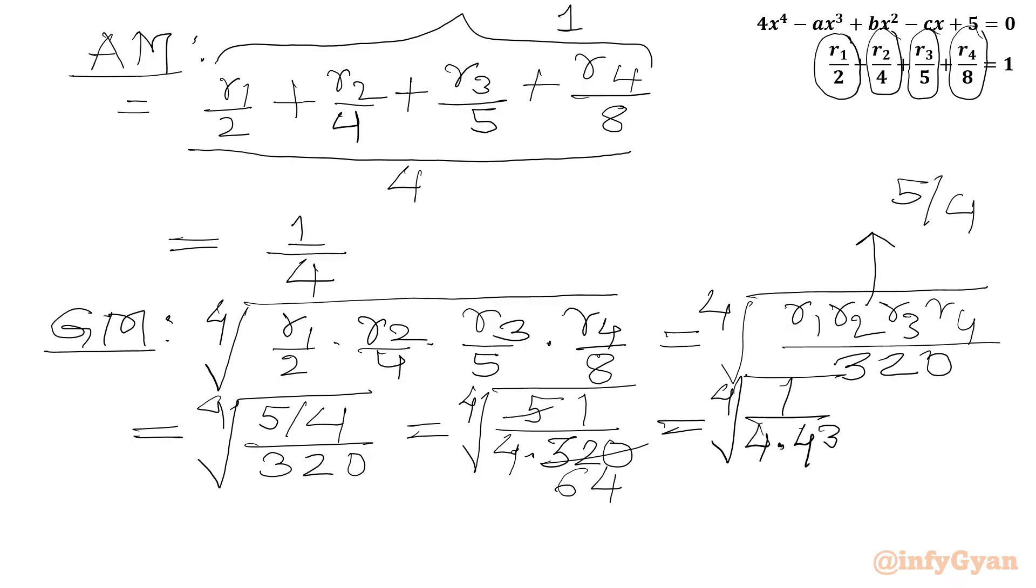So we will write fourth root of 1 over 4 to the power 4. Fourth root of 1 over 4 to the power 4 is 1 over 4.